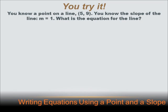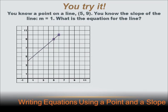You know a point on a line and that point is 5, 9. You know that the slope of the line is 1. What's the equation for the line? Well if we want to figure out the equation, we need both the slope and the y-intercept. We've got the slope, we need to figure out the y-intercept. And to do that, we need to graph the line. So to graph the line, I'll plot the first point that I know on there. I know 5, 9. So I go up to 5, and I go up to 9, and then I'll plot that point.